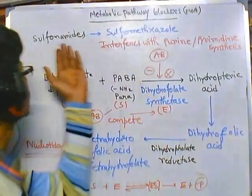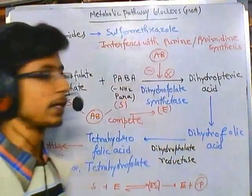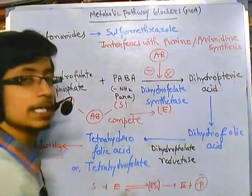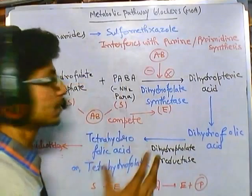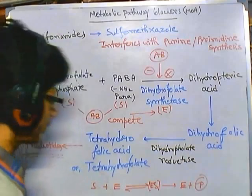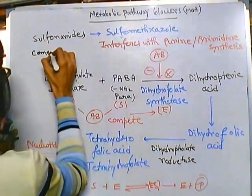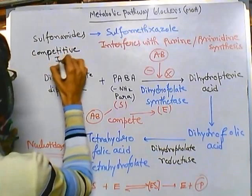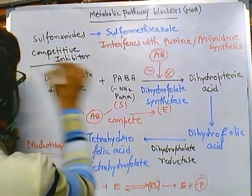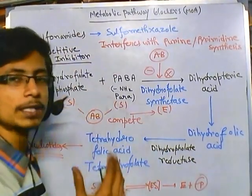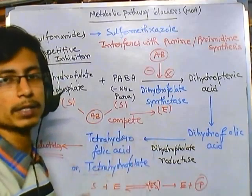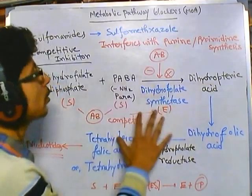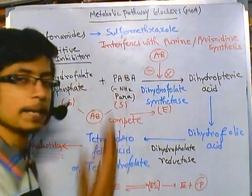Sulfonamides — such as sulfamethoxazole or sulfamethazine — are examples of antibiotics that interfere with the conversion of PABA and dihydrofolate diphosphate to dihydropteric acid. They act as competitive inhibitors: they attach to the enzyme and block it by forming an enzyme-antibiotic complex, so the enzyme won't get access to its substrate, and that substrate won't be converted into dihydropteric acid. That's the basic goal of blocking nucleotide synthesis by sulfonamide-type antibiotics.